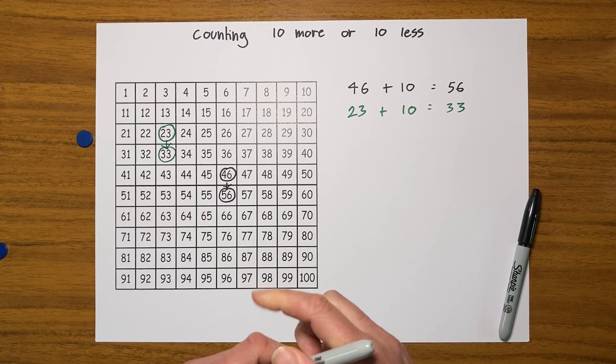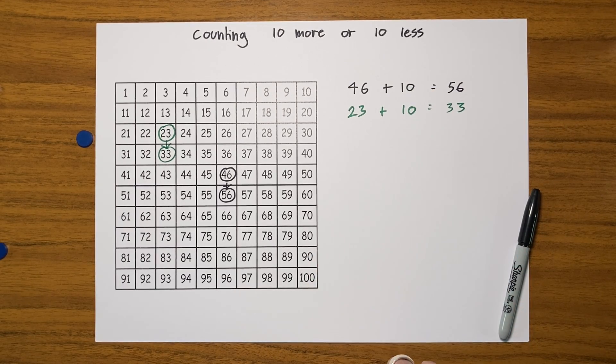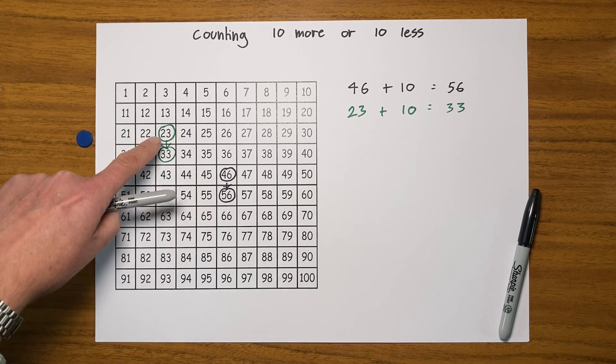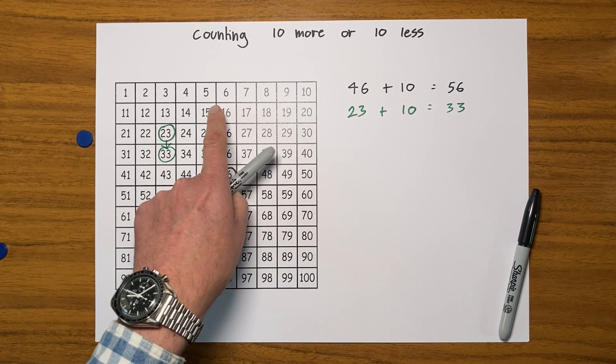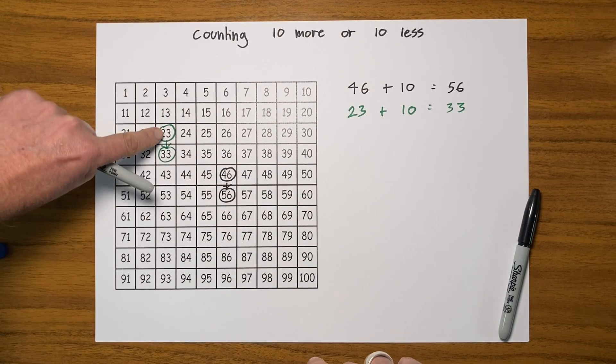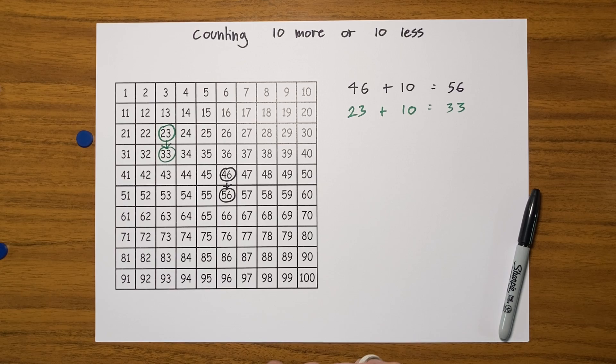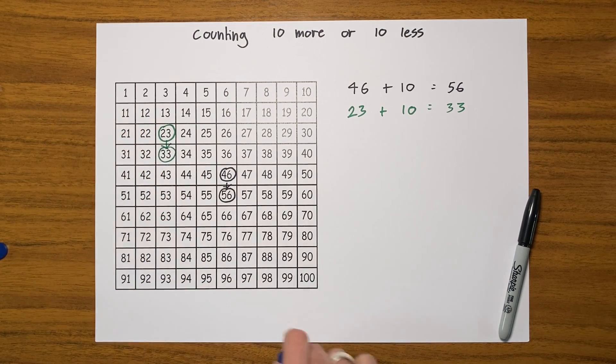Now we can do this also anyway to go back. 10 less than 23, I could count backwards 1, 2, 3, 4, 5, 6, 7, 8, 9, 10, or I could just move up a row. So let's try that, let me put my counter...